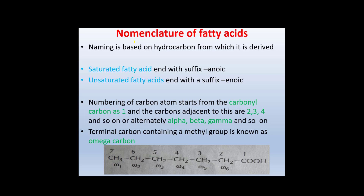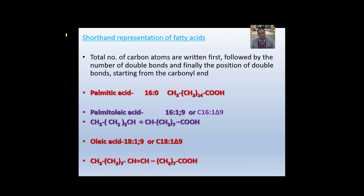Nomenclature of fatty acids is based on the parent hydrocarbon from which it is derived. Saturated acids end with the suffix '-anoic' and unsaturated acids end with '-enoic'. Carbon atoms are numbered from the carboxyl carbon as one, with adjacent carbons numbered two, three, four and so on, or alternatively alpha, beta, gamma. The terminal carbon containing the methyl group is known as the omega carbon. In shorthand representation, the total number of carbon atoms is written first, followed by the number of double bonds, and finally the position of the double bond starting from the carboxyl carbon.